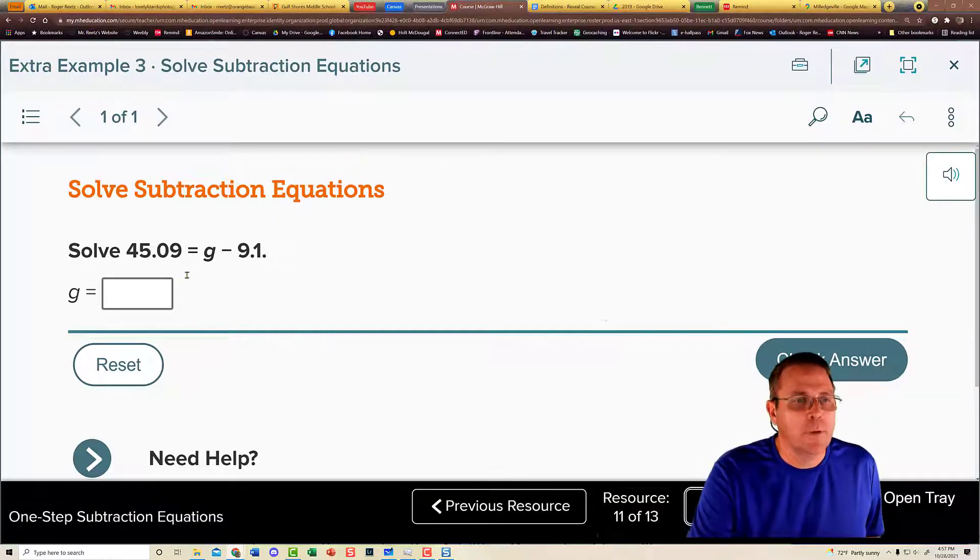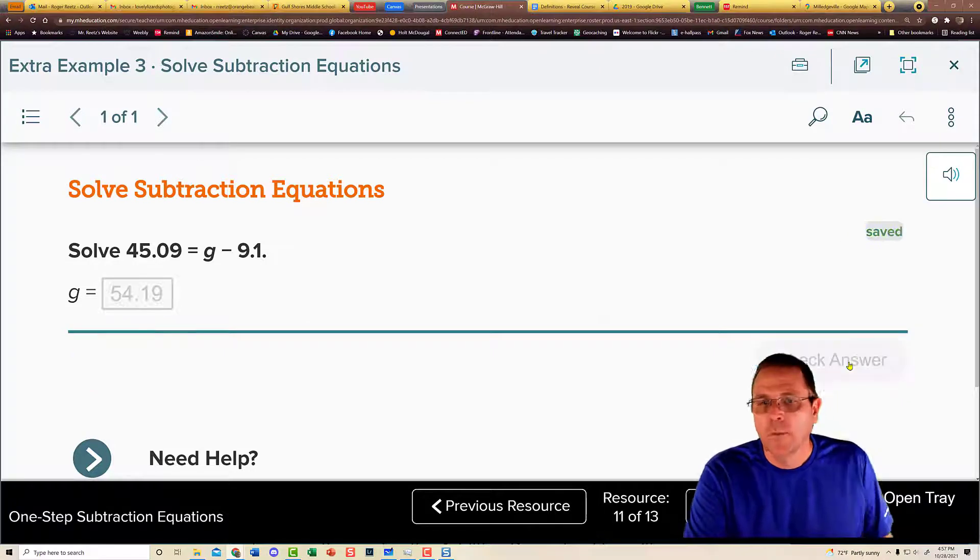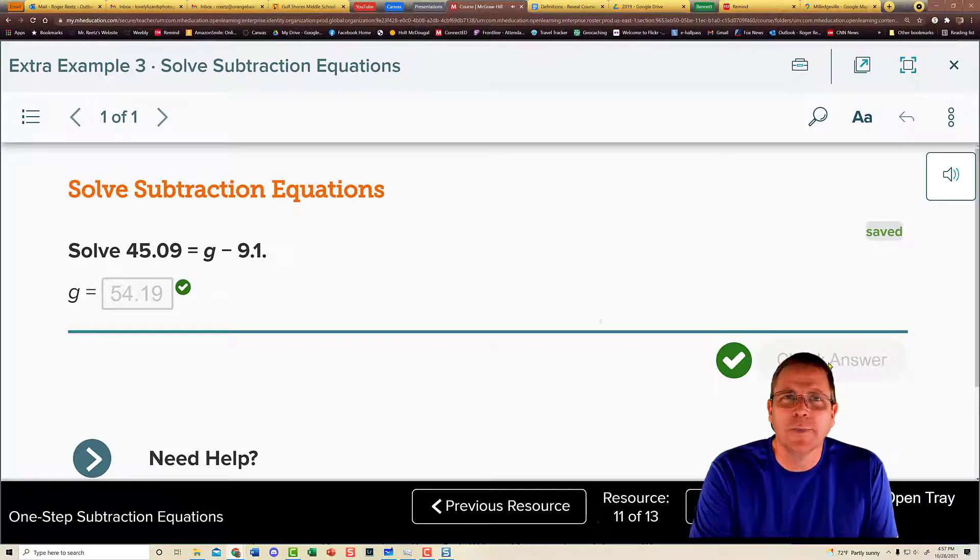Jump over here. Type in our answer. 54 and 19 hundredths. We're going to check. And it checks. Easy math.